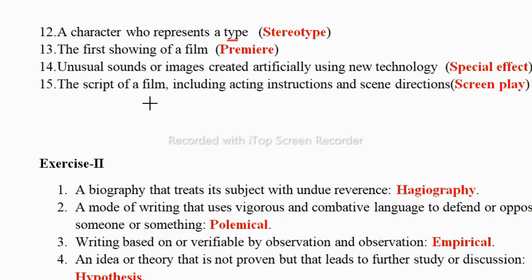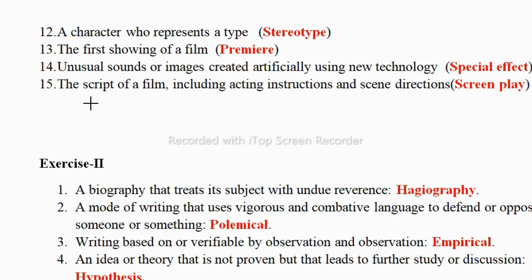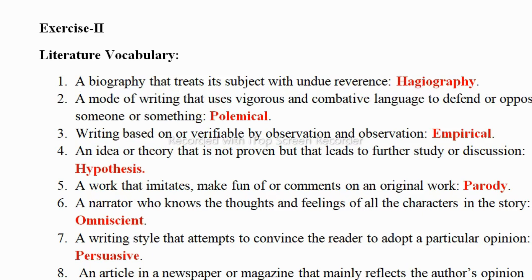Next: the script of a film including acting instructions and scene directions — it's called screenplay. Scripts are directions given to the hero and heroine about what to say or do while recording the movie. You can associate: before playing on the screen they have to memorize that script — so that's called screenplay.